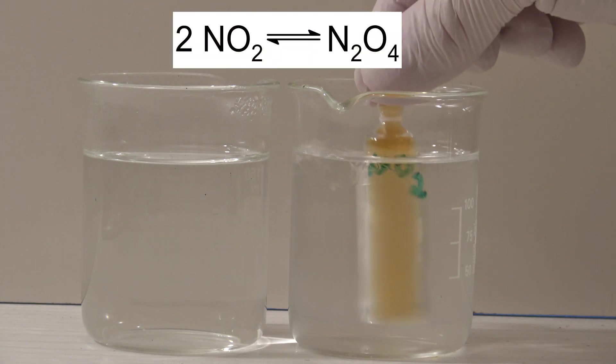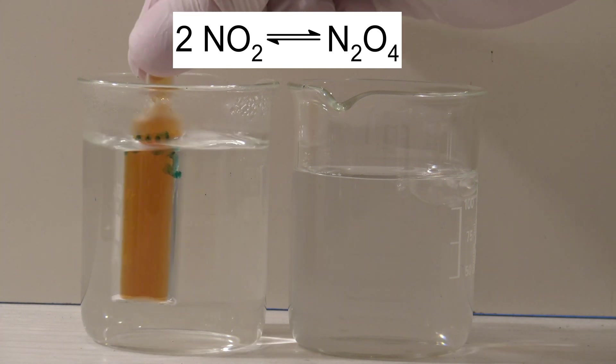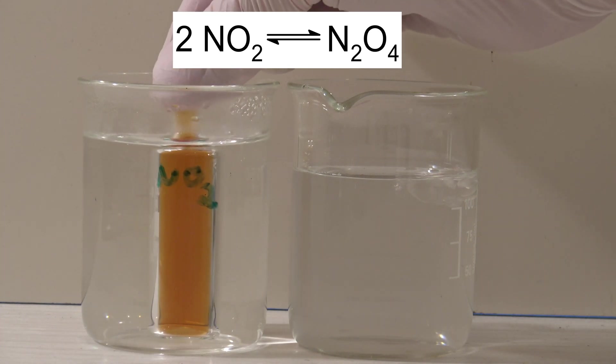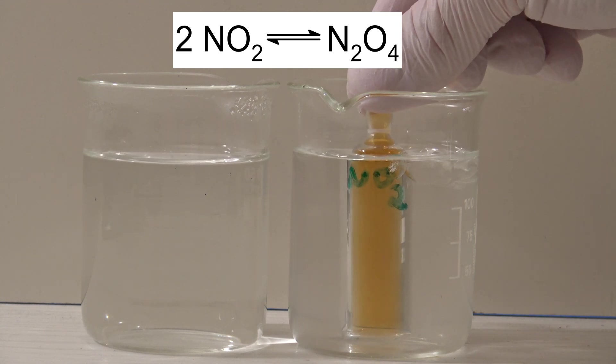This happens because the brown nitrogen dioxide exists in an equilibrium with its colorless dimer dinitrogen tetroxide. At high temperatures the equilibrium shifts to the left, at lower temperature to the right.